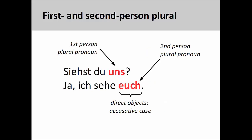This slide is a variation on what you have seen earlier, with plural personal pronouns being used in place of the singular pronouns. Again, as both pronouns are the direct object of the verb sehen, they must be in the accusative case.